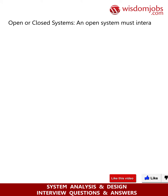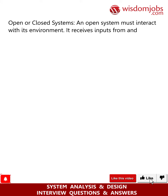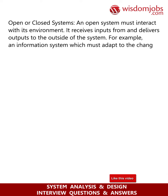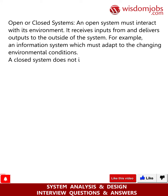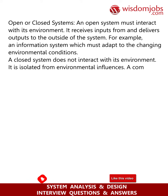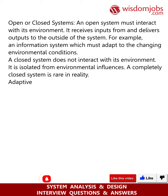Open or closed systems. An open system must interact with its environment; it receives inputs from and delivers outputs to the outside of the system. For example, an information system which must adapt to changing environmental conditions. A closed system does not interact with its environment; it is isolated from environmental influences. A completely closed system is rare in reality.